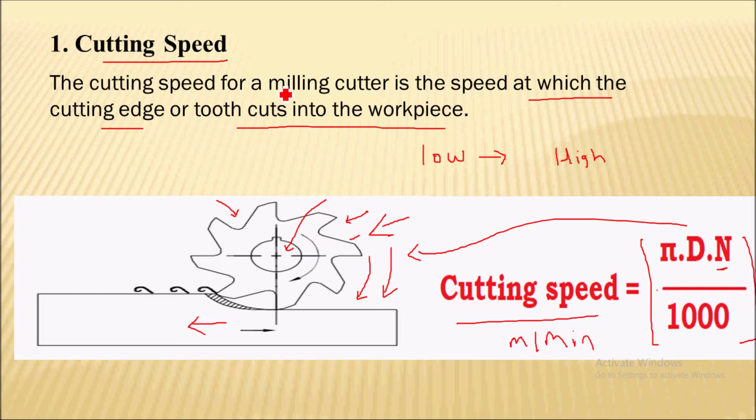So the cutting speed must be kept in between low and high - that is intermediate speed - which will be suitable for the cutter. Now this cutting speed may be affected by various parameters like tool material, workpiece material. Different workpiece materials have different mechanical properties, so they will have different cutting speeds.